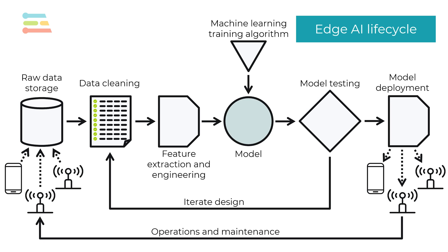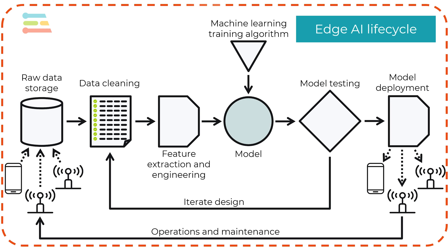Git works well for code, but not so much for other files, which includes raw data for machine learning. In reality, you want to be able to control all aspects of your AI lifecycle. In addition to your code, this includes things like your data, deployment mechanisms, and operating systems. Version control allows you to easily roll back changes, reproduce and troubleshoot errors, and enhance collaboration among your various team members.